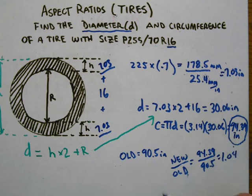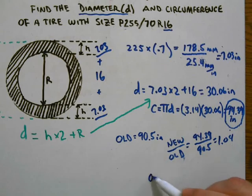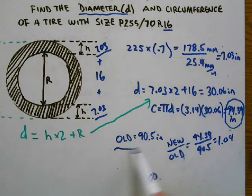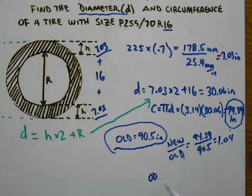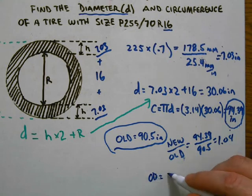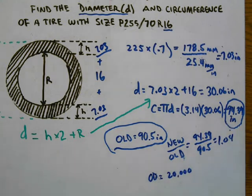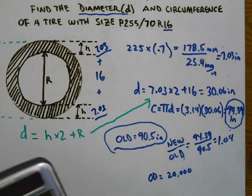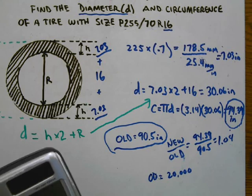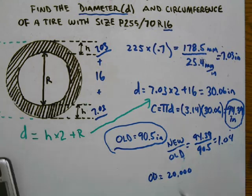So if the odometer reading—remember the odometer is calculated to the factory tires, the 90.5 ones—when you change it, it changes by a factor of 1.04. So if the odometer reads 20,000 on the car but you changed the tires, your actual mileage will be 1.04 times that, so 20,800 miles actually on the car.